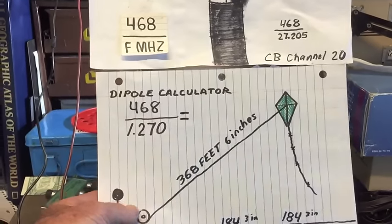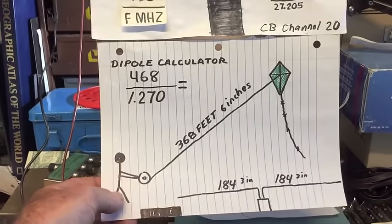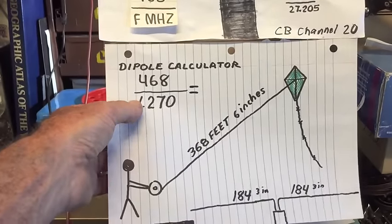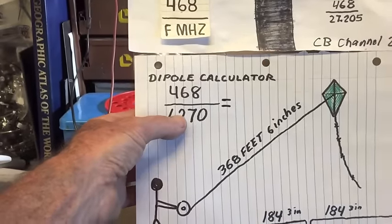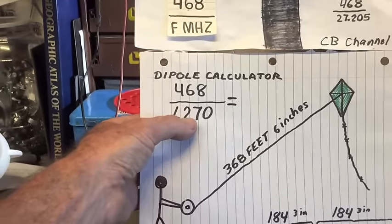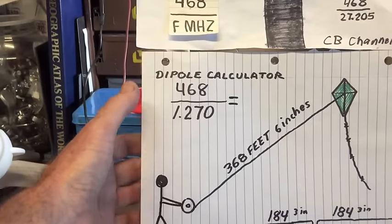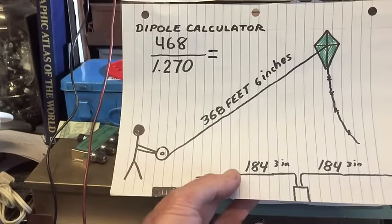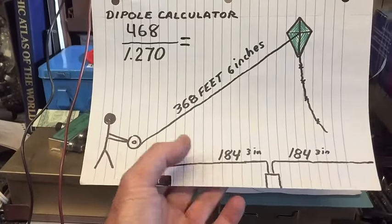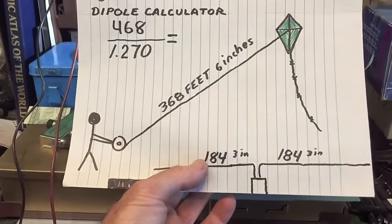I did the formula where you divide the frequency you're going to transmit or receive on into 468, and it'll give you a length in feet for what they call a half wavelength dipole. By the way, if you want to do this there are plenty of calculators online that will help you do the math.